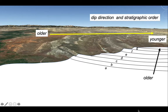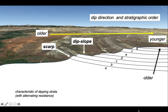The younger rocks are on top of older, so that the stratigraphic order we see in the subsurface is reflected in the strip pattern we see at outcrop. The manifestation of this in the landscape is a series of scarp and dip slopes — the steep scarp slopes and the more gently inclined dip slopes on the back sides. This is characteristic of dipping strata, especially those with alternating resistance to erosion — strong layers and weaker layers.